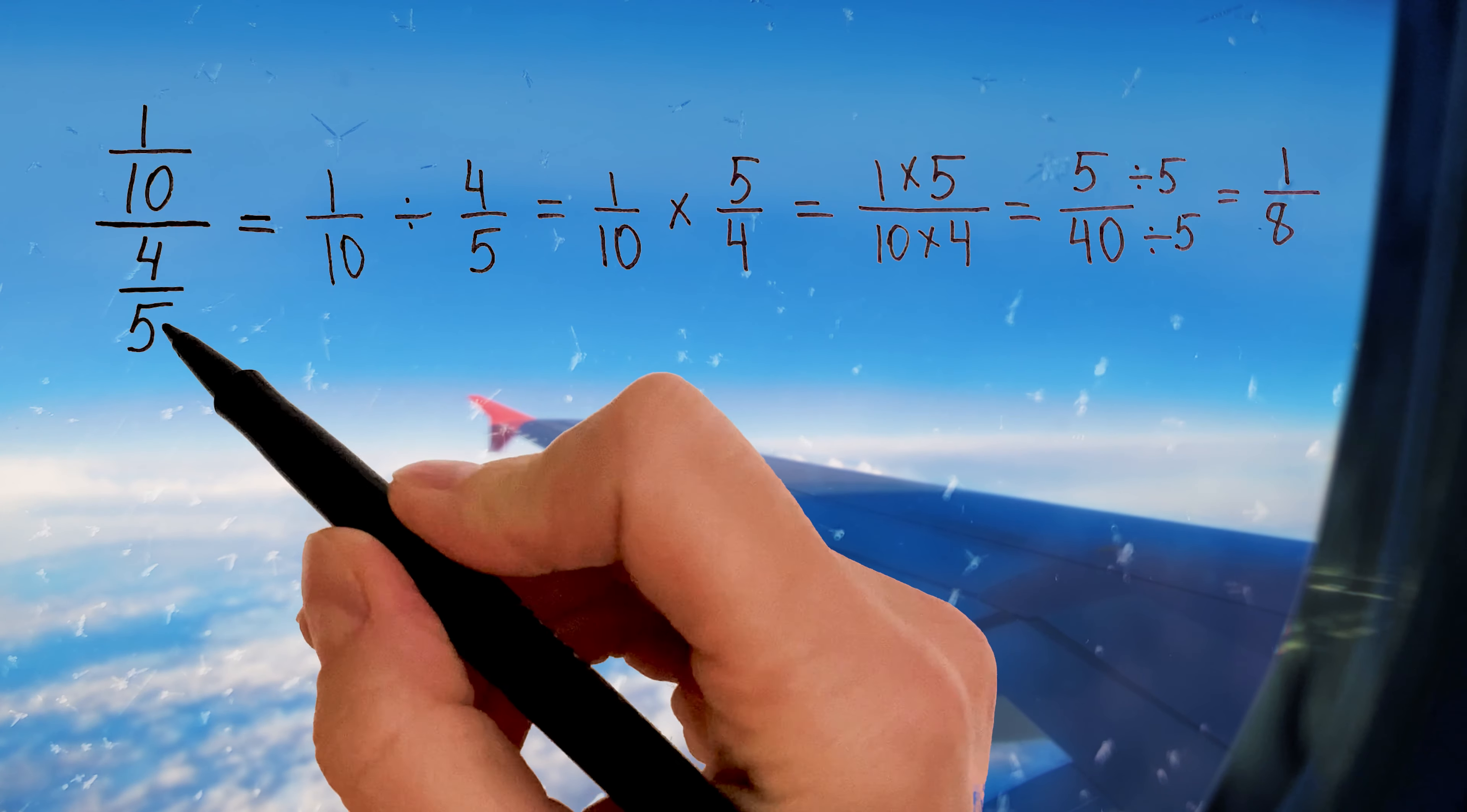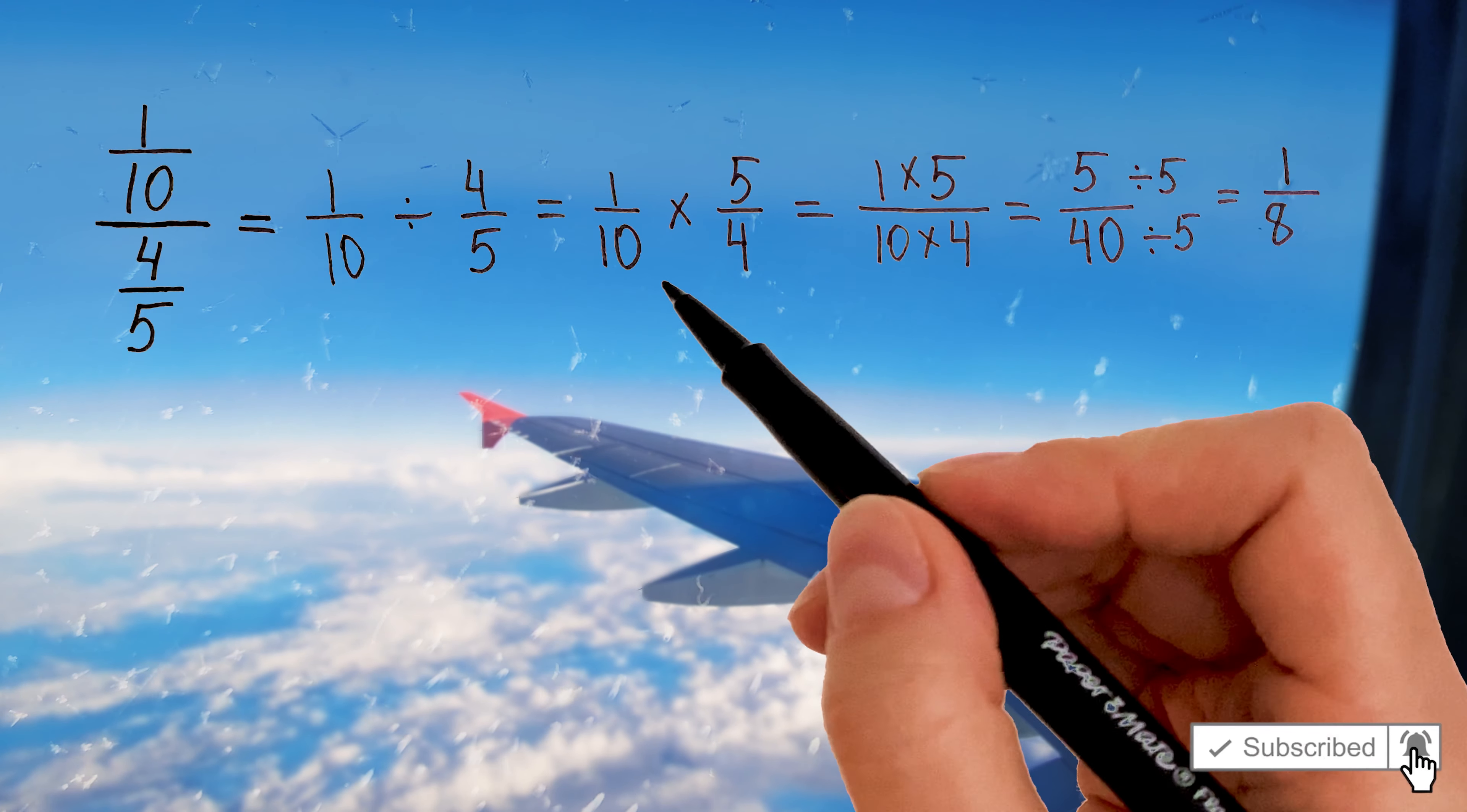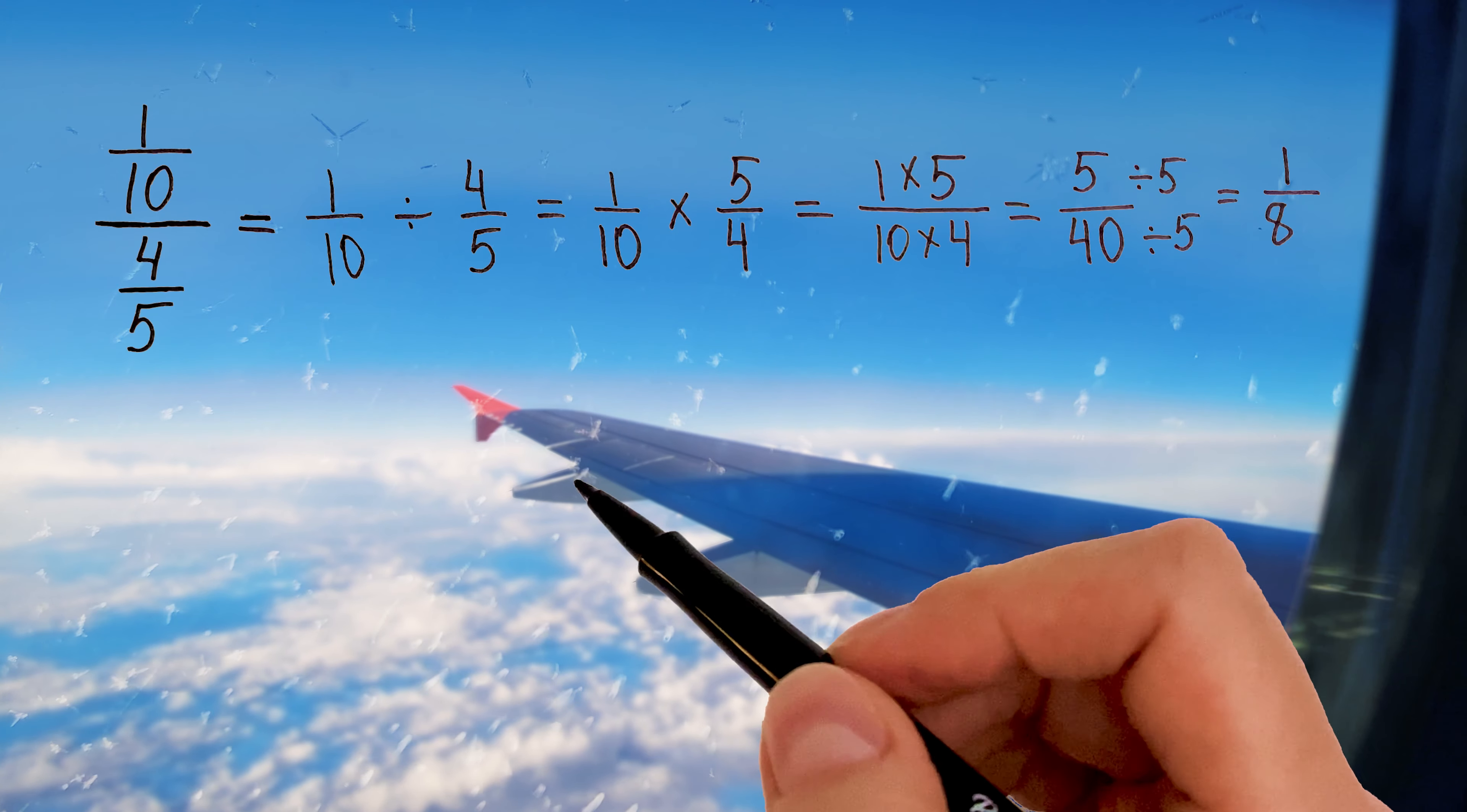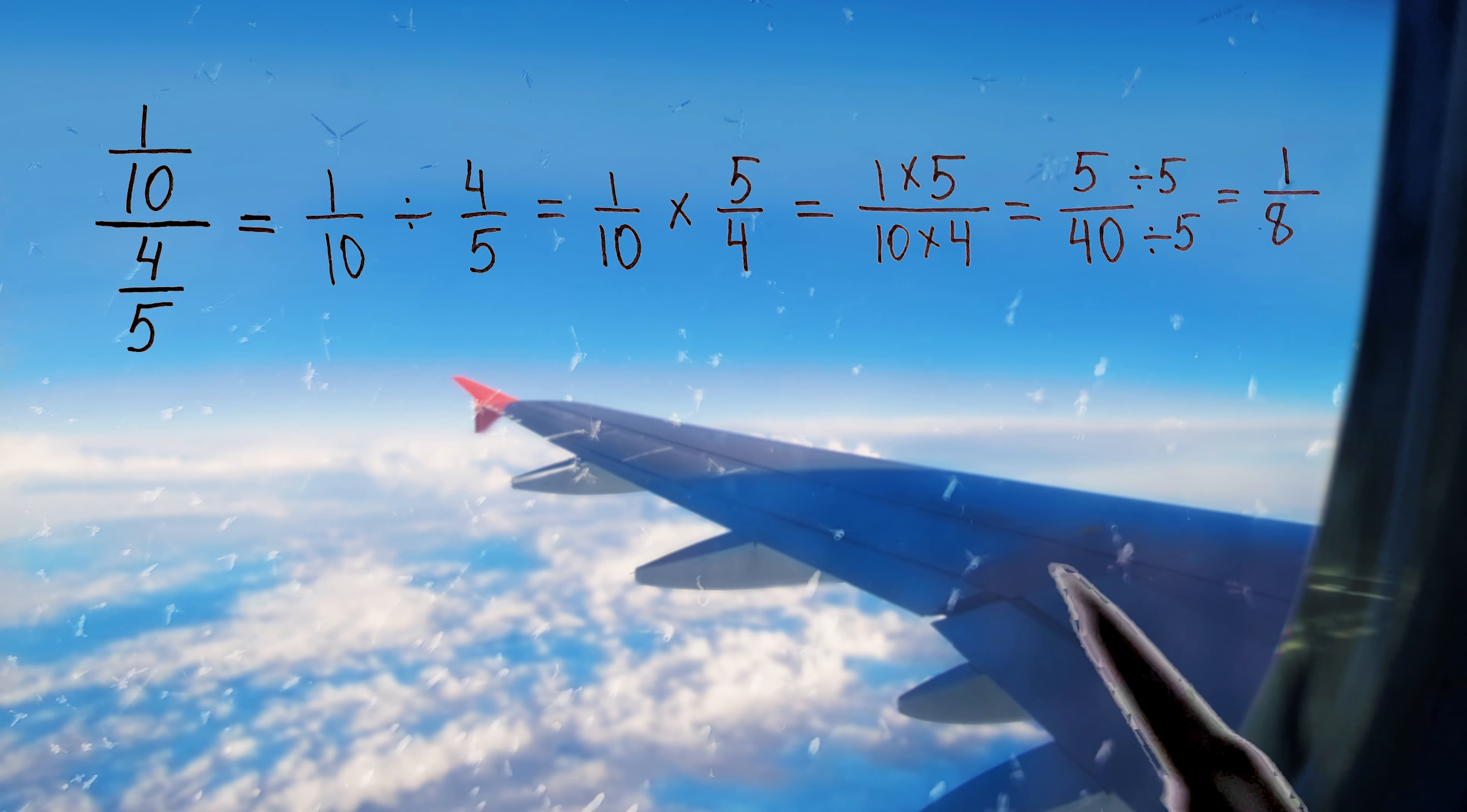Now we are multiplying fractions. To multiply fractions, first multiply the numerators. One times five. Let's write it down. One times five. Then multiply the denominators. Ten times four. Let's write it down. Ten times four. Very good.